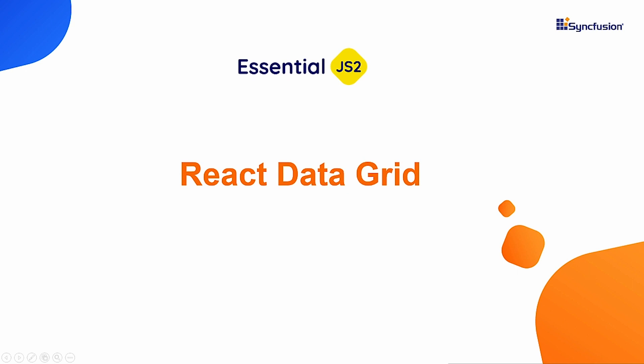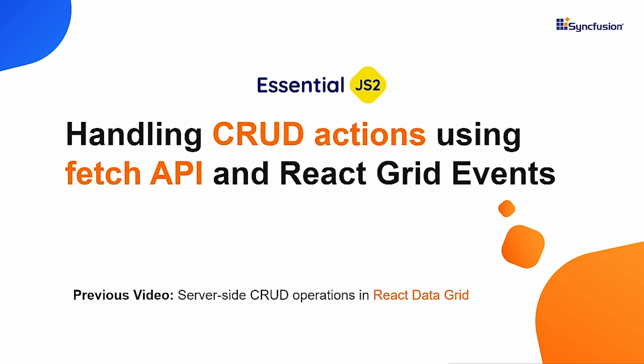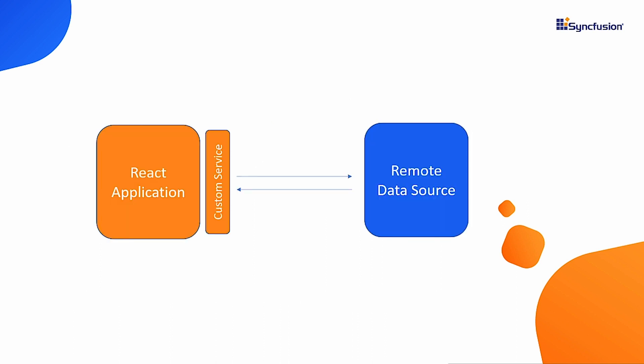Welcome back everyone to this series on working with the React Data Grid of Syncfusion. Last time you saw how to handle CRUD operations in the grid at the server side using Data Manager. In this video, I will create a custom service to communicate with the server using the fetch API, and then bind the custom service to the data grid using the client-side event of the grid component.